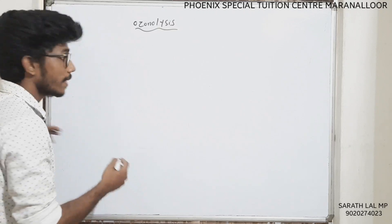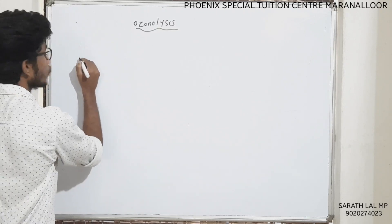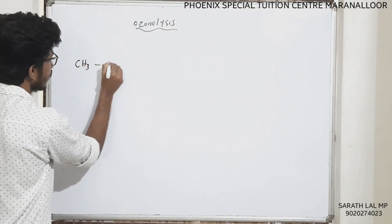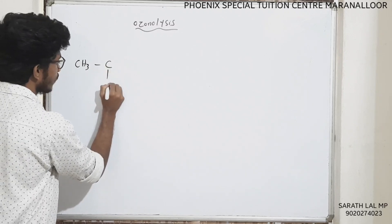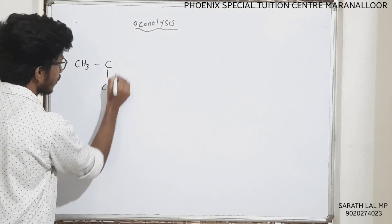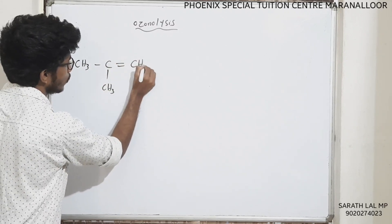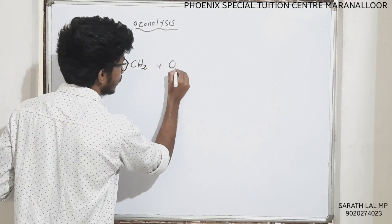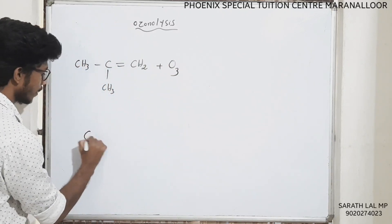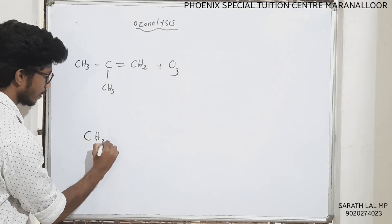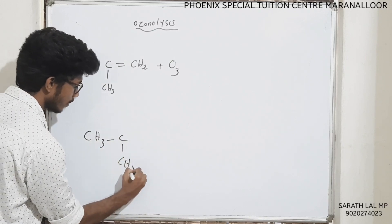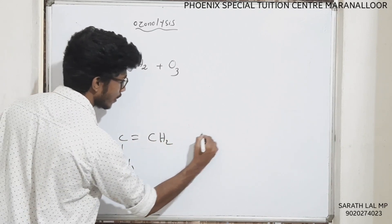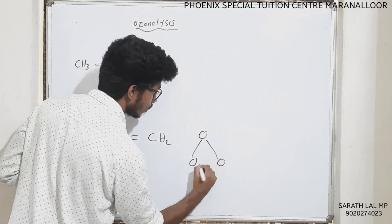Now let's take 2-methylpropene: CH3-C(CH3)=CH2 — 2-methylpropene. That is why we treat with ozone. Now let's say CH3-C(CH3)=CH2 — that is why we treat with ozone.